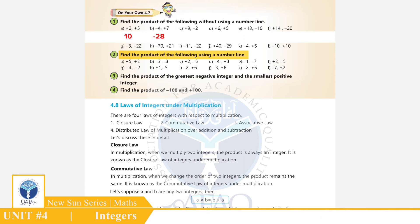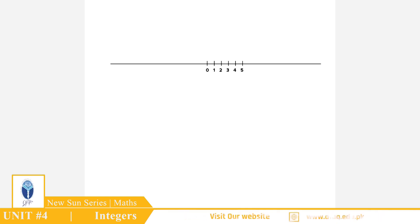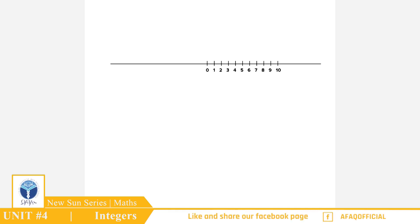Question No. 2: Find the product of the following using a number line. Part A: (+5) × (+3). Number line पर 0 से +5 तक जाएंगे, अब +5 और add होगा तो +10 तक पहुंचेंगे, फिर +5 और add होगा तो +15 तक पहुंच जाएंगे।